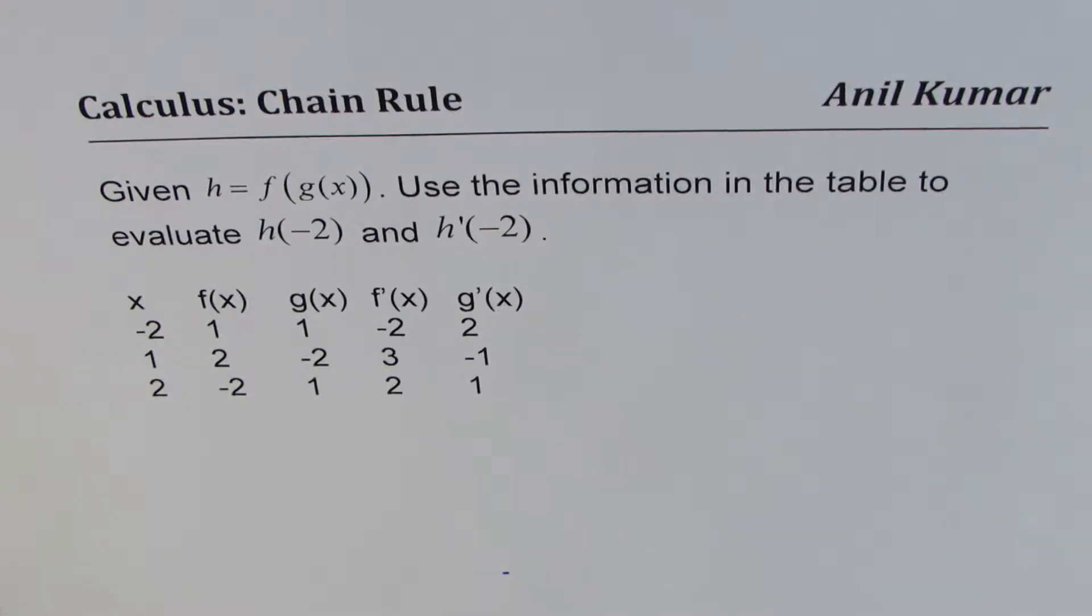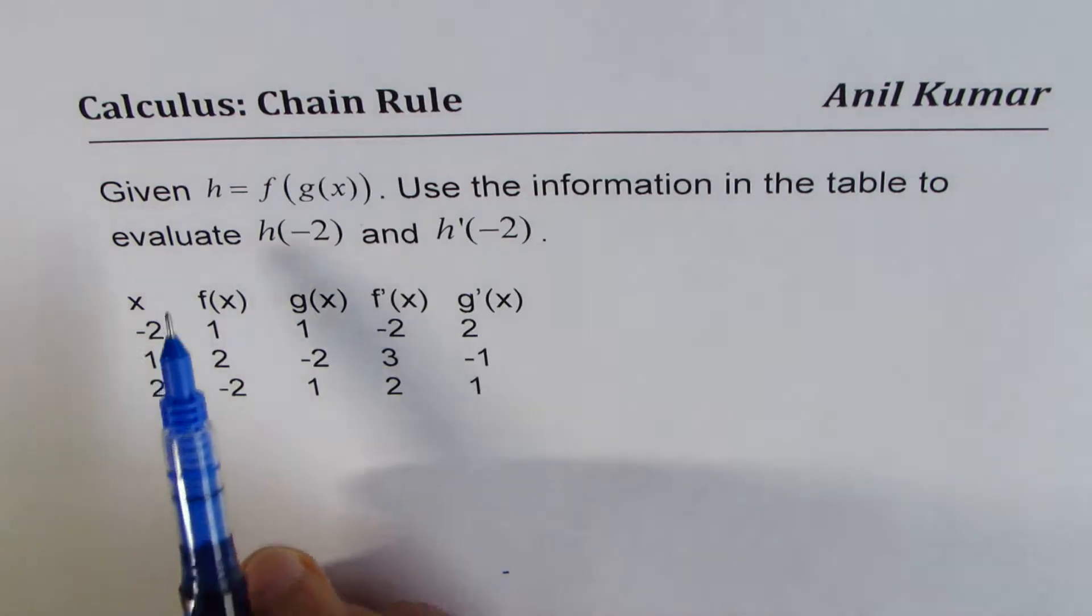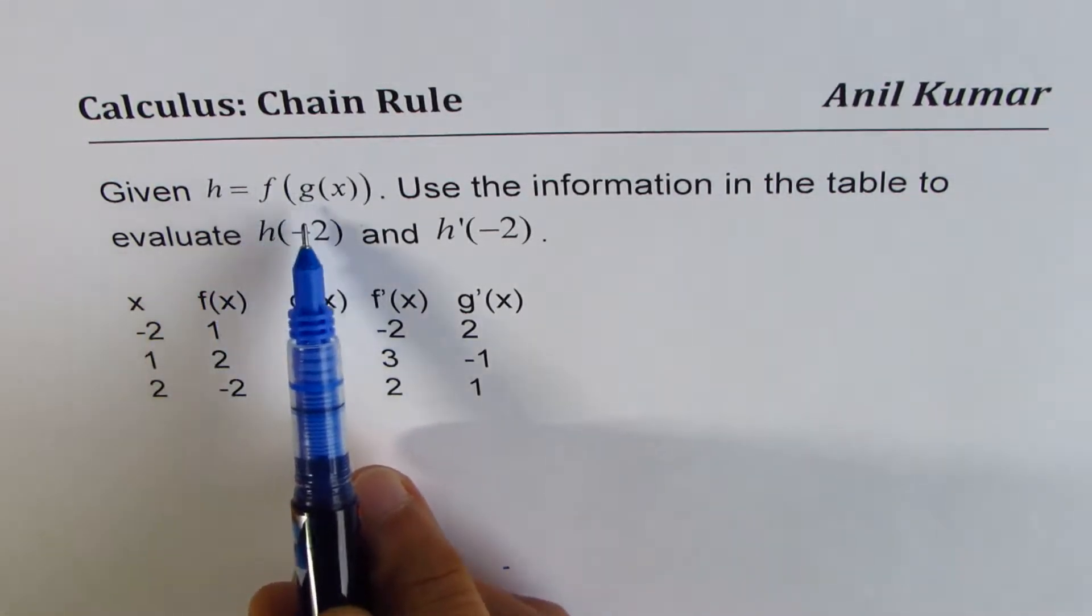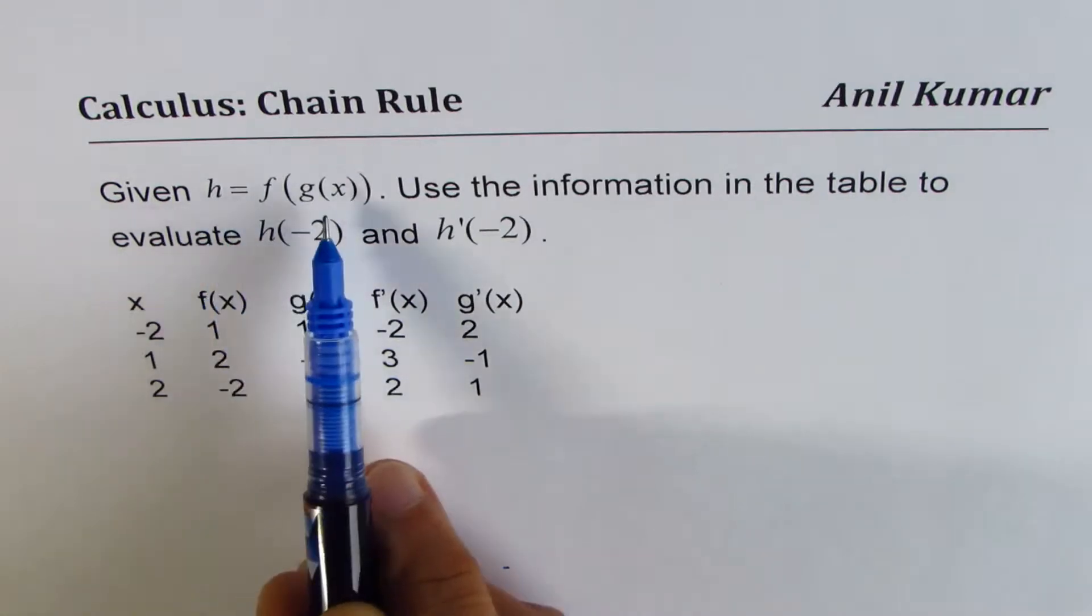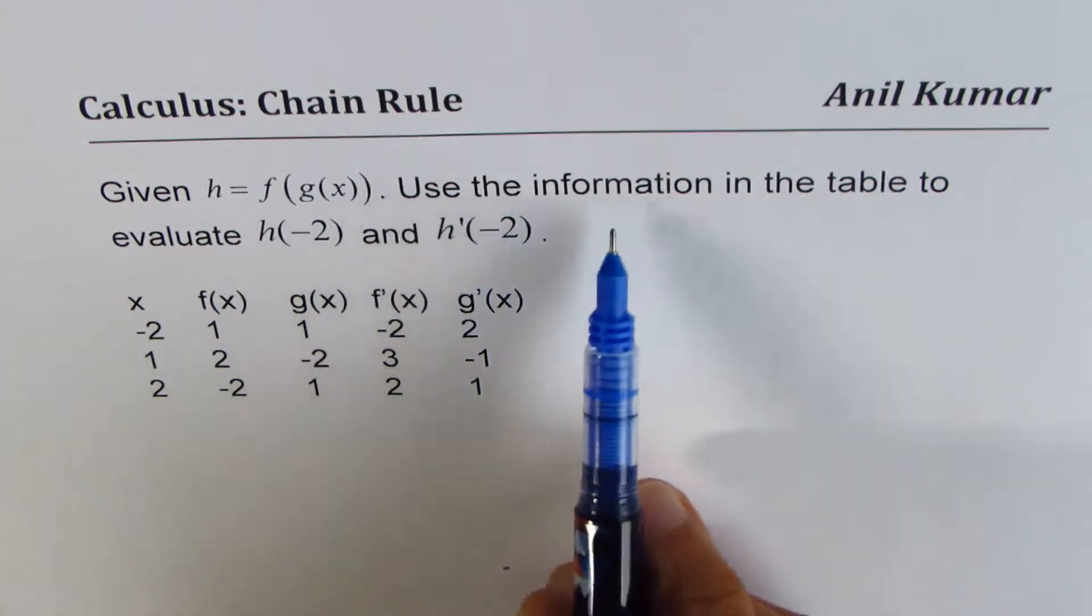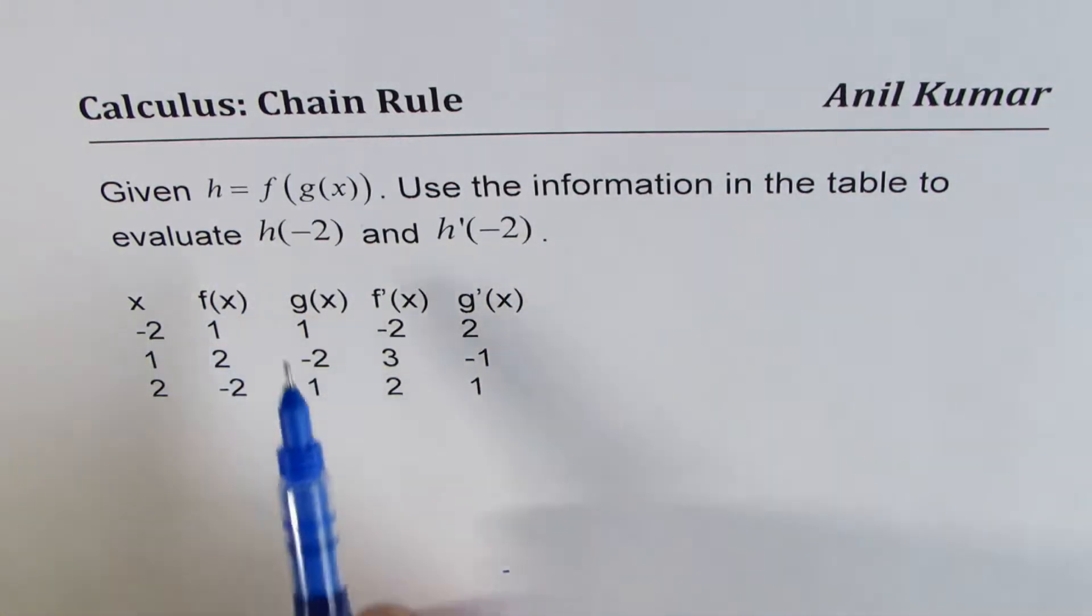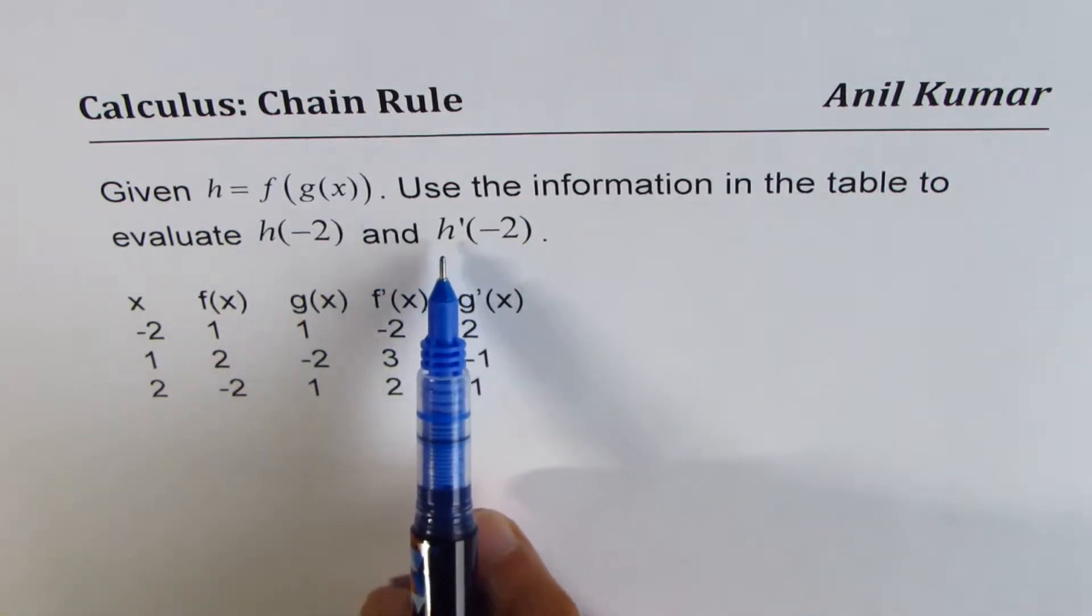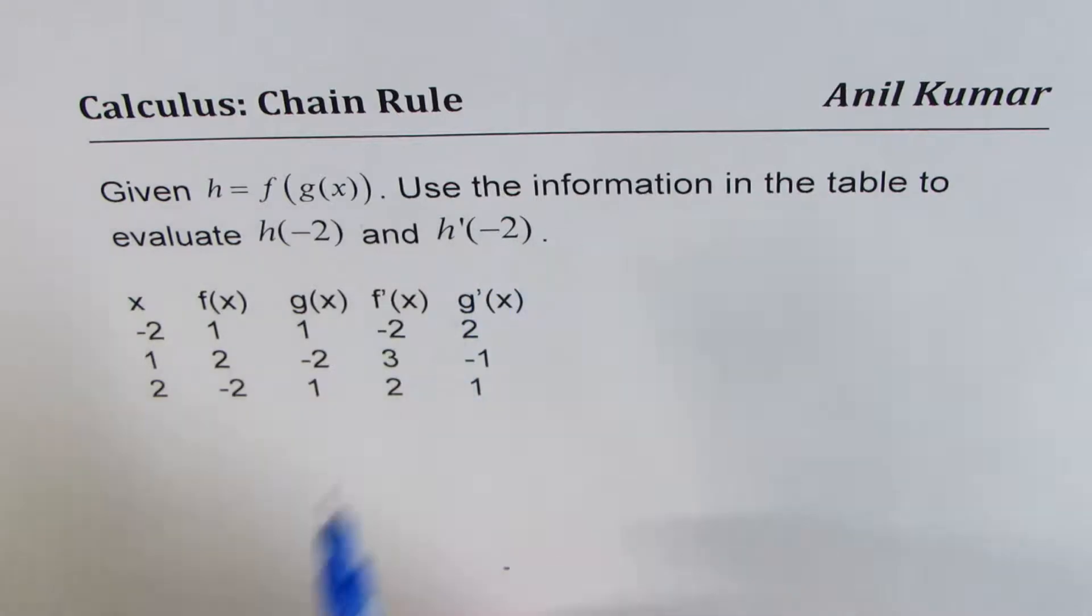I'm Anil Kumar and in this video we will learn how to find chain rule from given values in the table. The question is, given h equals f of g of x, so h is function of x, use the information in the table to evaluate h of minus 2 and derivative of h at minus 2.